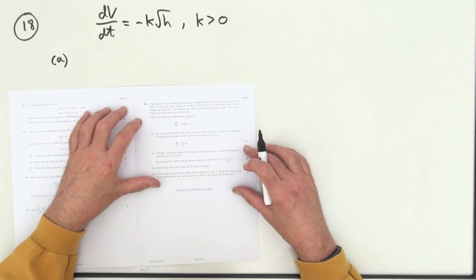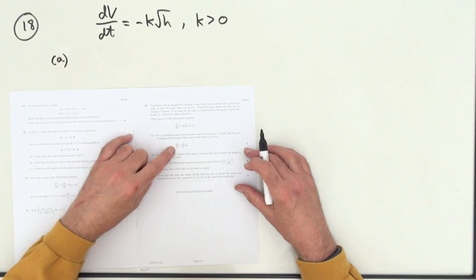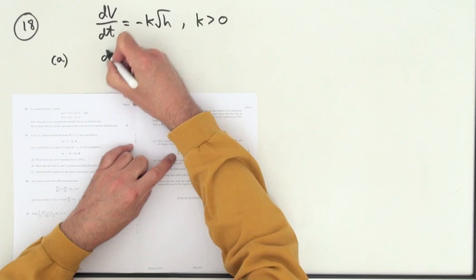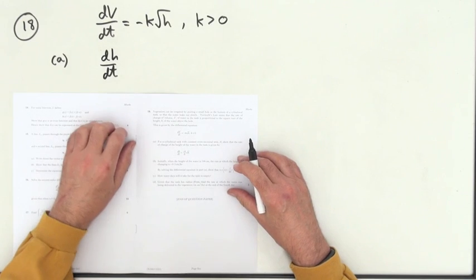Part A. For a cylindrical tank with constant cross-sectional area A, show the rate of change of the height of the water. So that means you're looking for dH by dT. It's given by this expression.